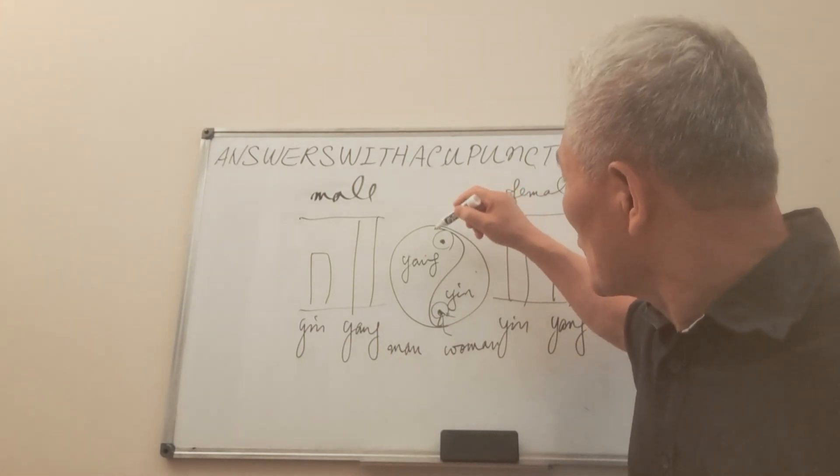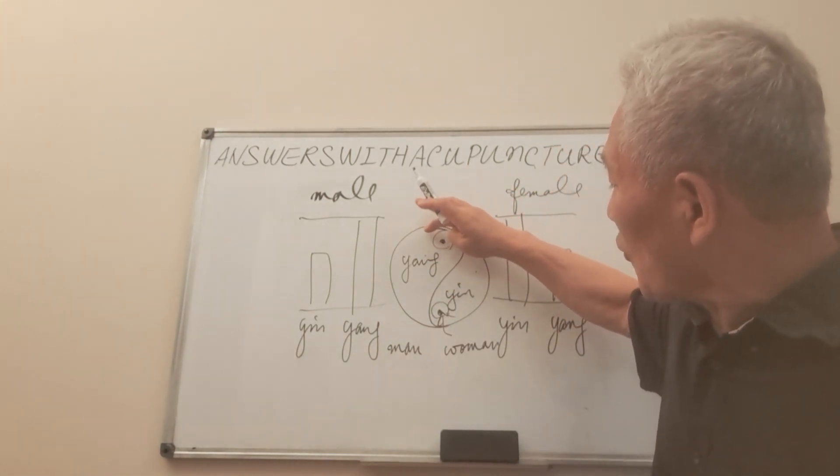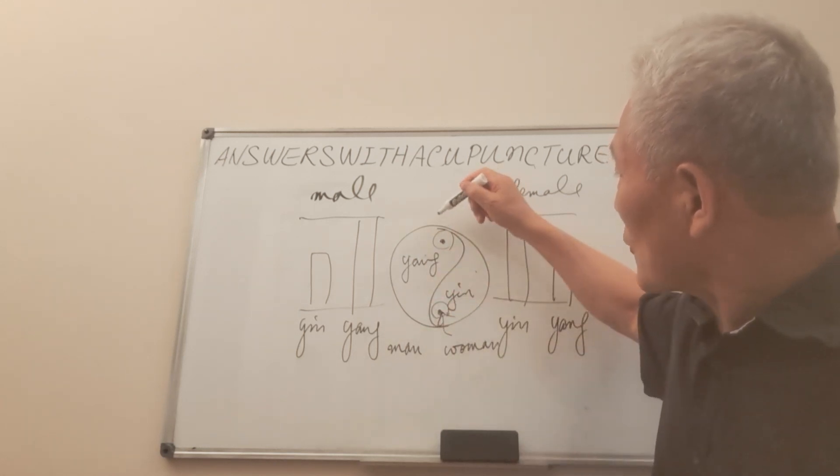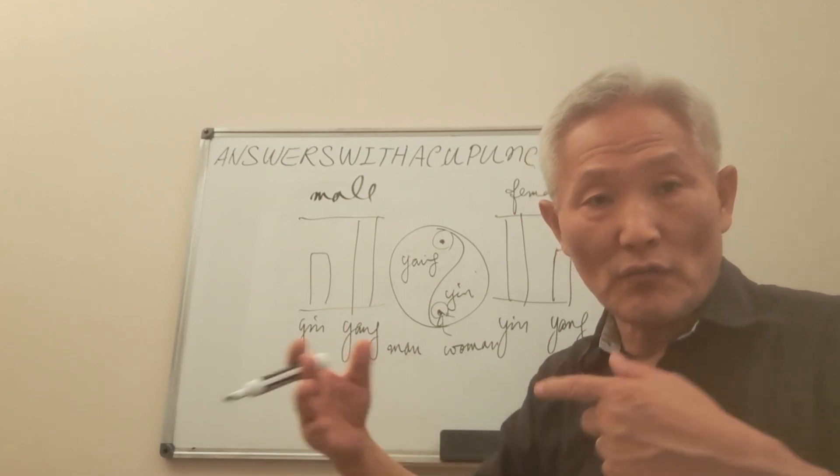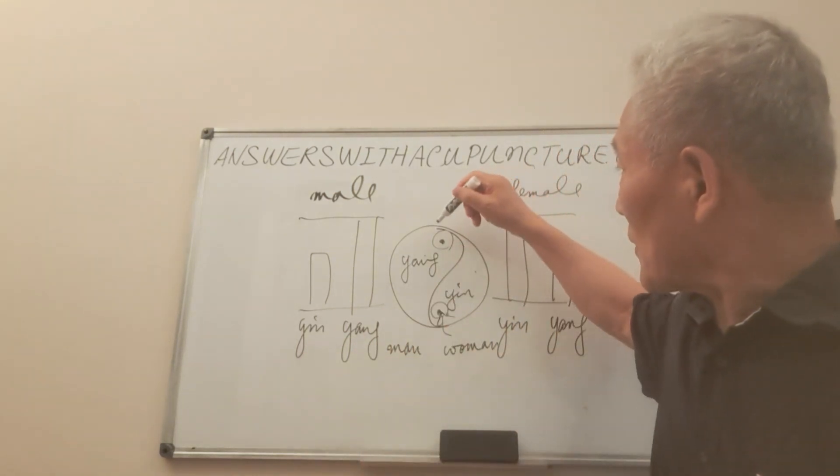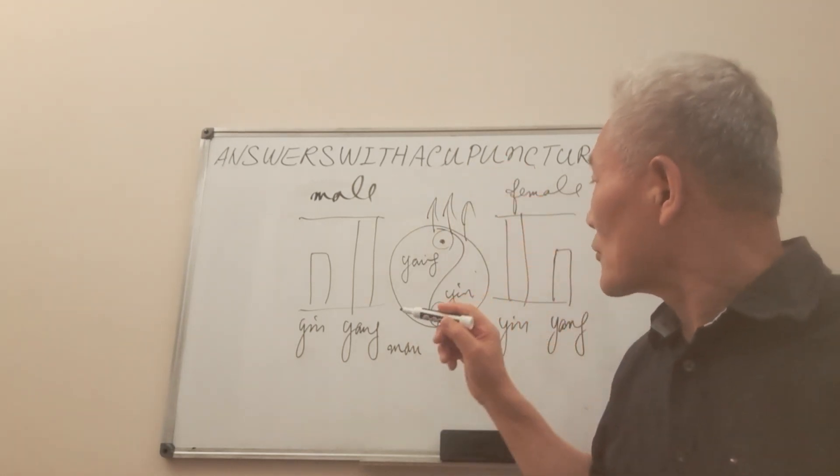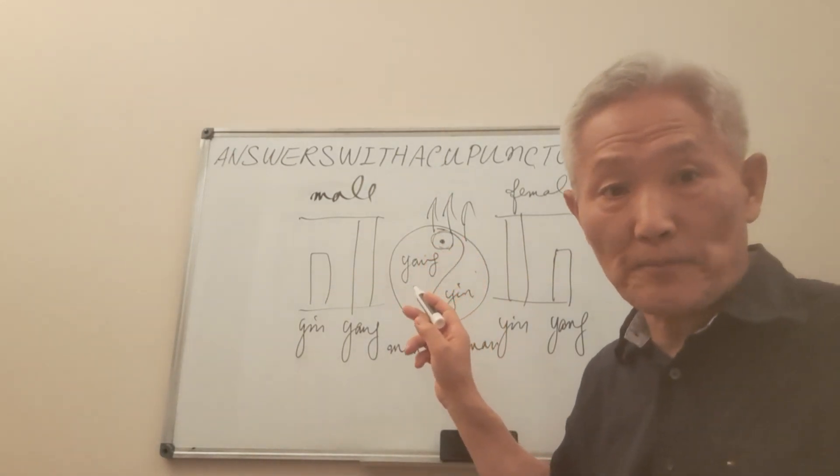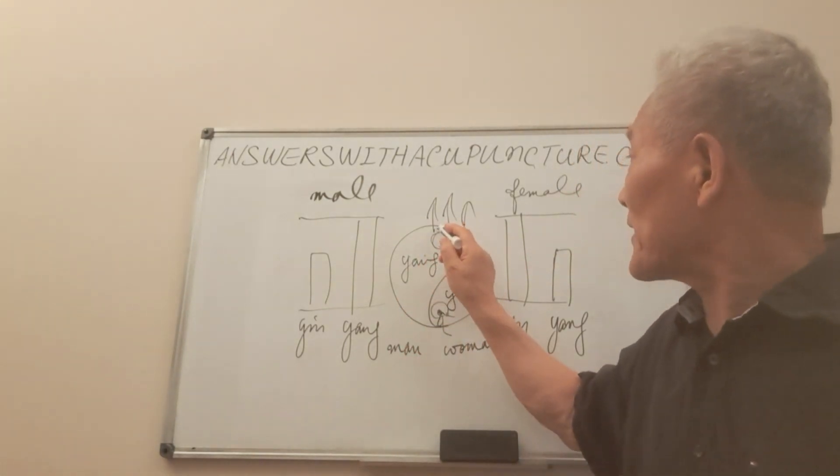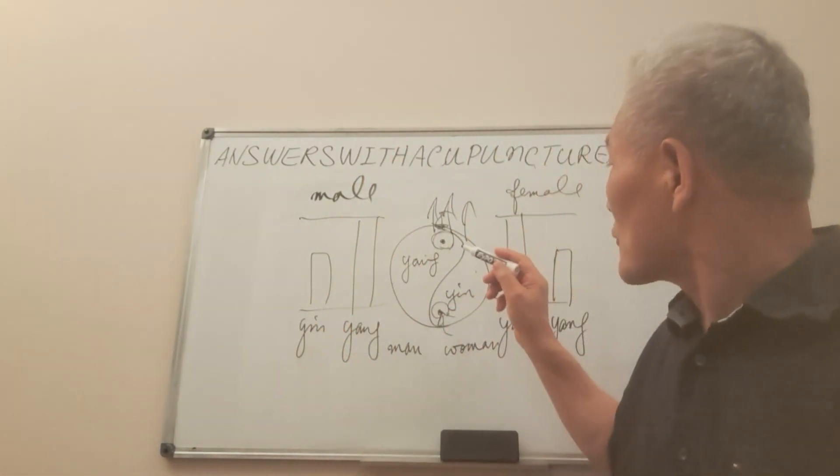So now, this part, this part is the warm part. This is a cold part. So sexual activity between husband and wife is that, this is coming out this way. So this is a man's pelvic area is very close to coming out.